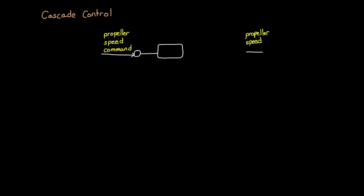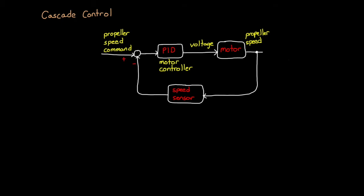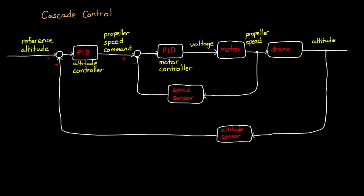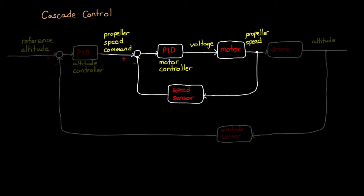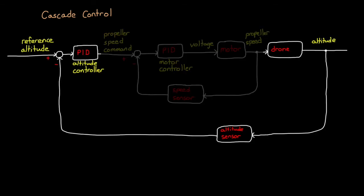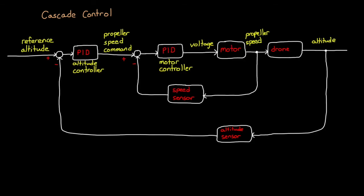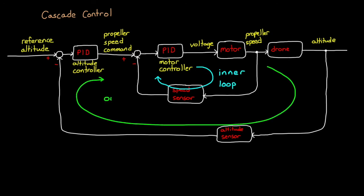There's the command, which goes through its own comparator, and the resulting error is fed into a PID controller. The output of the controller is voltage, which is applied to the motor, causing the motor to spin. The motor speed is measured by a sensor and fed back into the comparator. So now we have two feedback loops in our system: one that controls the motor speed, and one that controls the drone altitude. We can call these two loops the inner and outer loops, so that we can distinguish between the two.